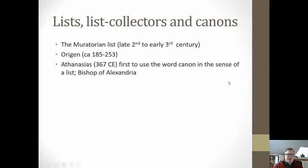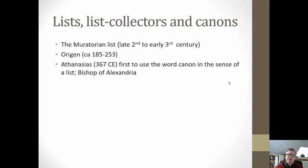We also have the first sort of list of the New Testament canon — the Muratorian list — which has all 27 documents plus a few others. That's also around the late 2nd century, around 180–190. Early 3rd century, around 210, Origen begins to talk about a New Testament. He's the first one to use this word, although he's not referring to the Gospels — he's talking about what Jesus brought as a New Testament.